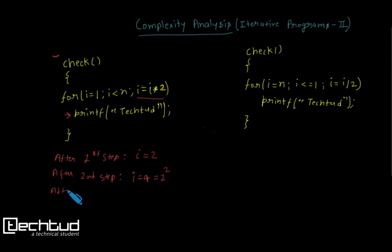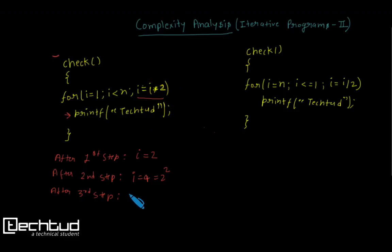After the third step, i is 4, the condition is true, printf executes, and i becomes 8. This continues until the condition i < n becomes false. So suppose after some k steps...